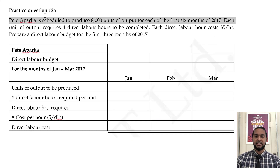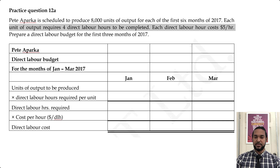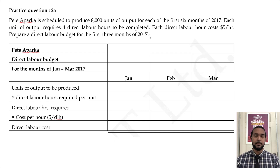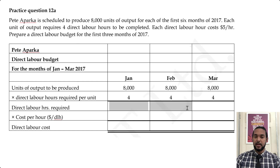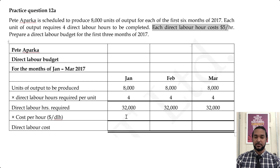Example two — your turn. Peter Parker is scheduled to produce 8,000 units of output for each of the first six months of 2017. Each unit requires four direct labour hours to be completed, and each direct labour hour costs $5. Prepare a direct labour budget for the first three months of 2017. Take a pause and try the question. The answer: 8,000 units by four hours gives 32,000 direct labour hours per month, and 32,000 by $5 gives $160,000 total direct labour cost per month.